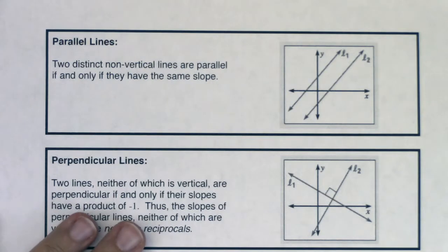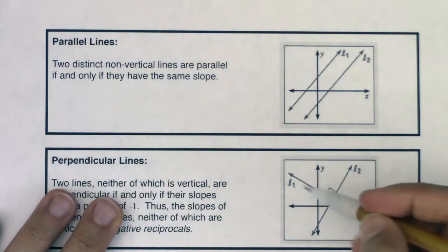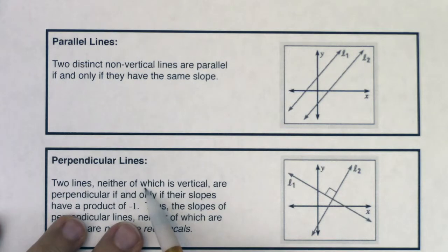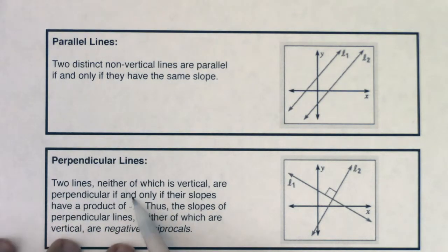On the flip of that, perpendicular lines meet at right angles, so these two lines are perpendicular because this angle here, this intersection angle is 90 degrees. So two lines, neither of which are vertical, are perpendicular if and only if their slopes have a product of negative 1. Thus, the slopes of perpendicular lines, neither of which are vertical, are negative reciprocals.